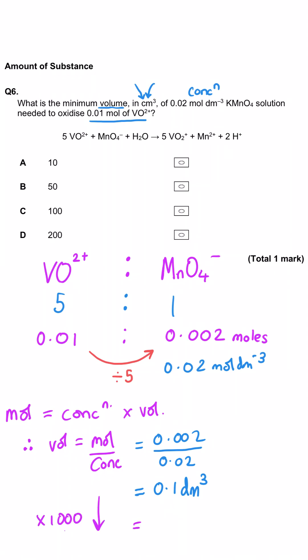so we need to multiply this by 1000, and so we get 100 CM cubed as our answer for this question.